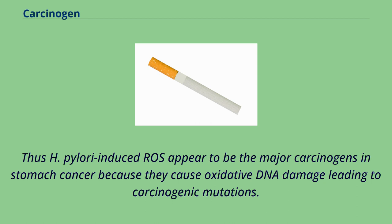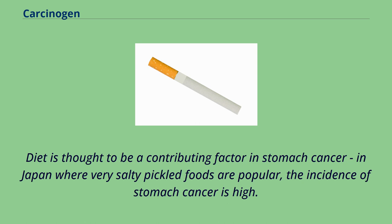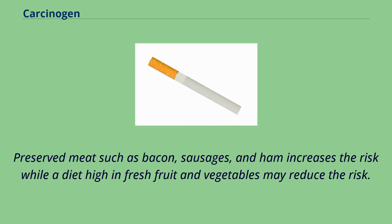Diet is thought to be a contributing factor in stomach cancer. In Japan, where very salty pickled foods are popular, the incidence of stomach cancer is high. Preserved meat such as bacon, sausages, and ham increases the risk, while a diet high in fresh fruit and vegetables may reduce the risk. The risk also increases with age.